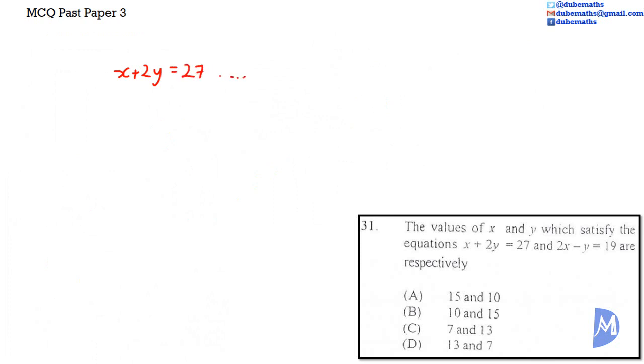Equation 1. Equation 2. We are going to eliminate X. Equation 1 multiplied by 2 gives 2X. 2X plus 4Y is equal to 54. We'll call this new equation equation 3.